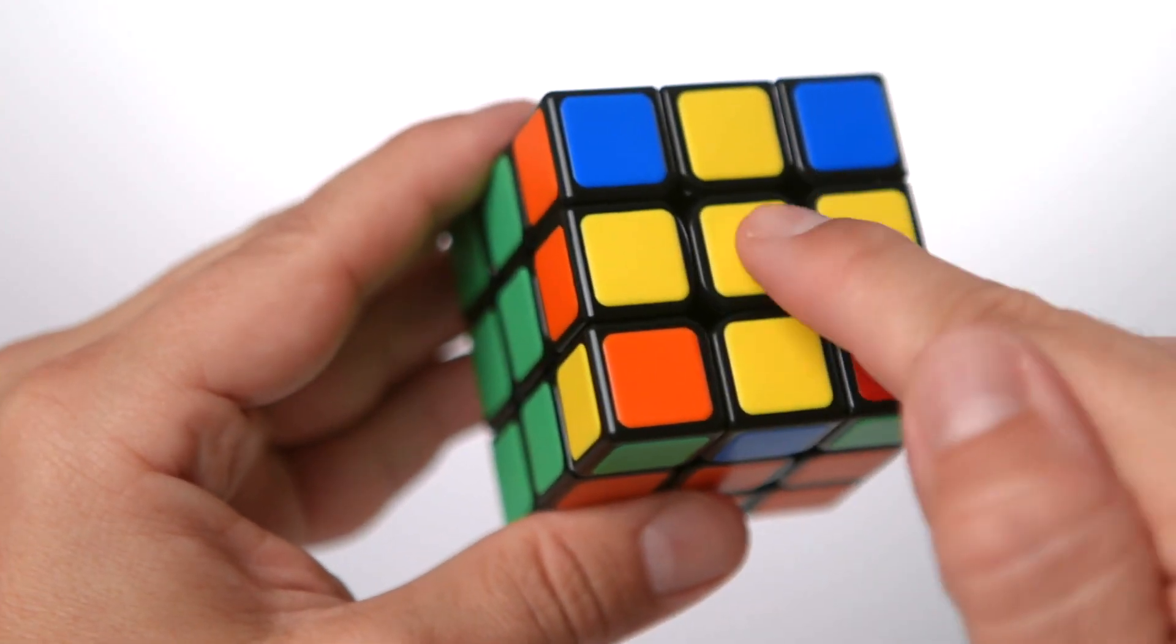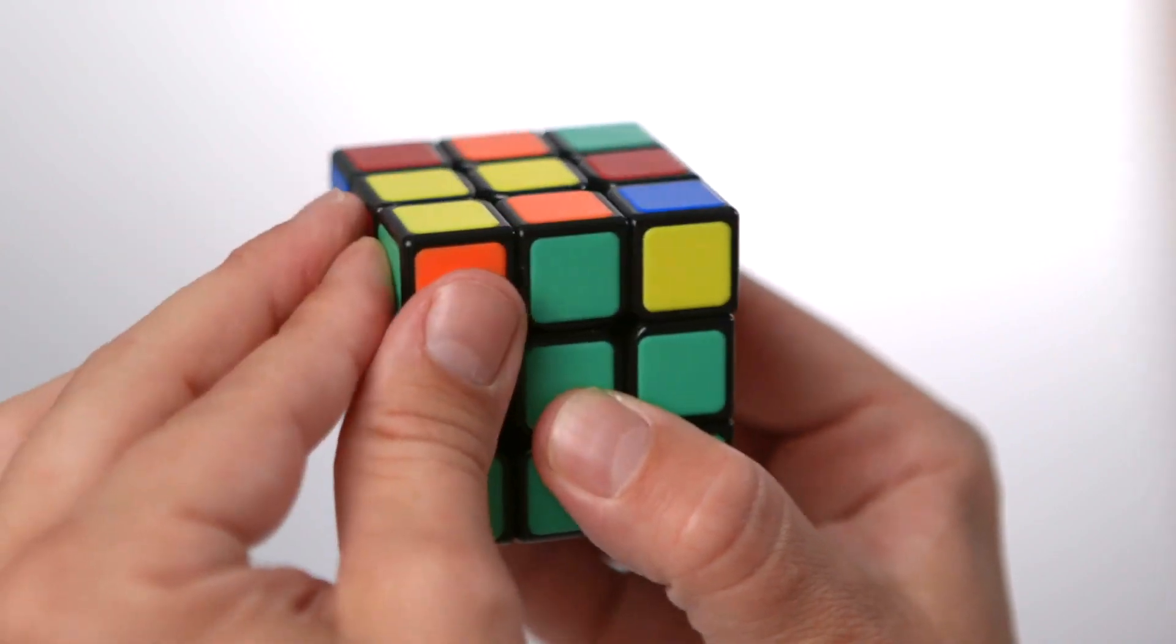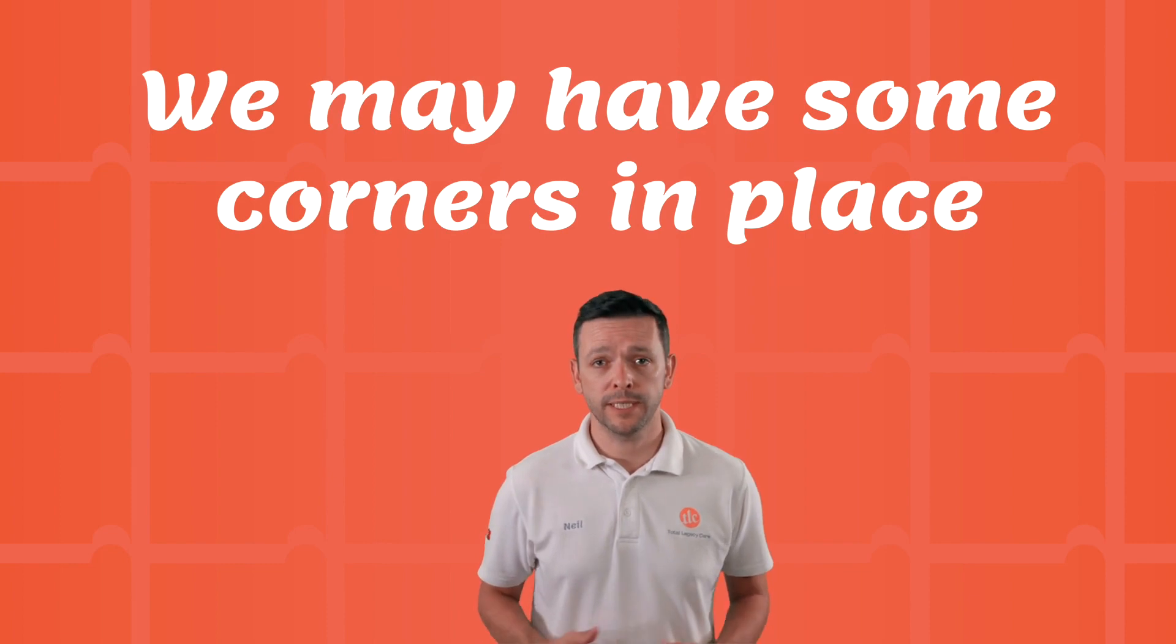Position yellow on top, sides to move right and top only. From the last lesson we may have some of the corners in place. Our cube should be in one of the following positions.